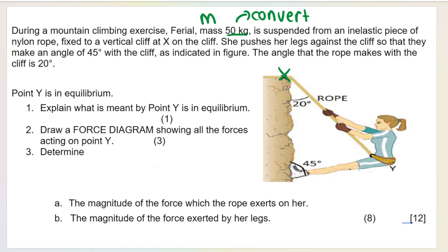The angle that the rope makes with the cliff is 20 degrees. The first question asks: what is meant by point Y is in equilibrium? This is only one mark. It basically means that F net acting at that point is zero. This is a forces in equilibrium question, which means acceleration is zero - either point Y is stationary or it's moving at a constant velocity. It's obvious in this case that it's not moving.